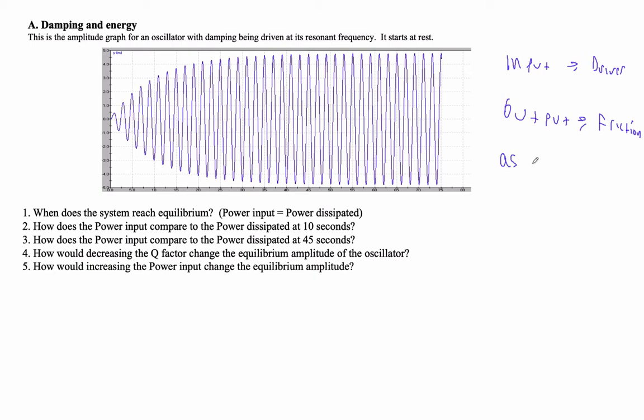As the amplitude increases, the output or dissipation increases. And that's because it's going farther in a cycle. It's also going faster. Remember that the dissipative force, the damping force, is some constant times the velocity. So the faster it goes, the bigger the force is. The farther it goes, the more energy it's dissipating.